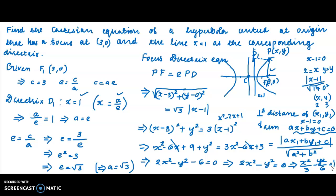Dividing through by 6: x²/3 − y²/6 = 1. This is the Cartesian equation of the hyperbola in standard form x²/a² − y²/b² = 1, where a² = 3 and b² = 6, giving a = √3.